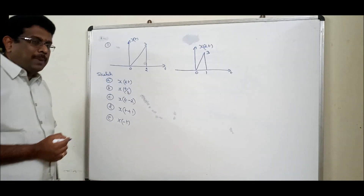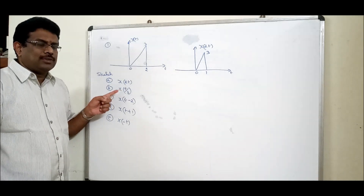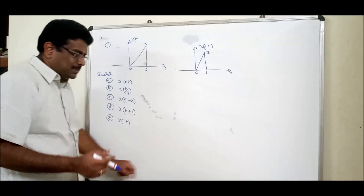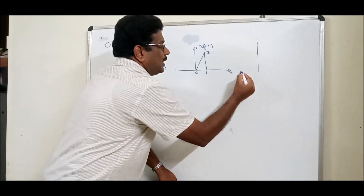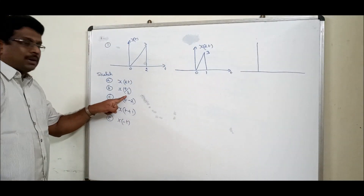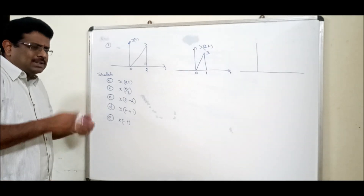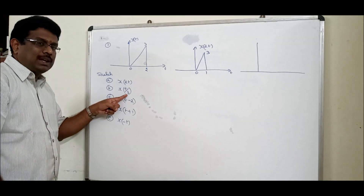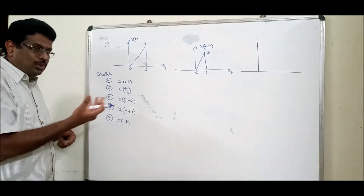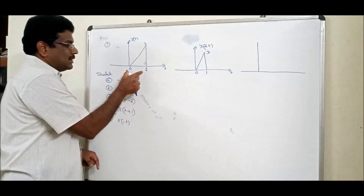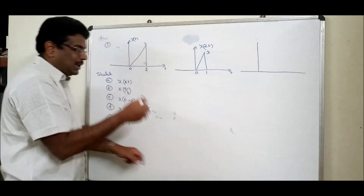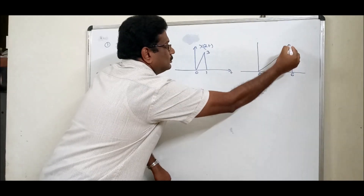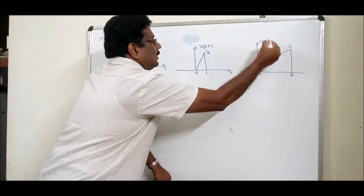Next, x(t/3): the value of A is 1/3, which is 0.33, which is less than 1, so it comes under expansion. How many times? Three times. The original signal goes from 0 to 2; multiply by 3 to get 0 to 6. So x(t/3) is the same signal expanded from 0 to 6.